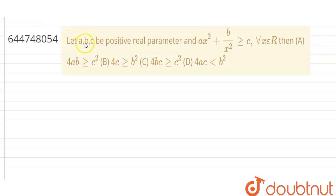Hello students, the question is: let a, b and c be the positive real parameters and ax² + b/x² is always greater than or equals to c for all x belongs to R. Then we have to calculate whether 4ab, 4c, 4bc, or 4ac is greater than or equals to c² or b² according to the given options.